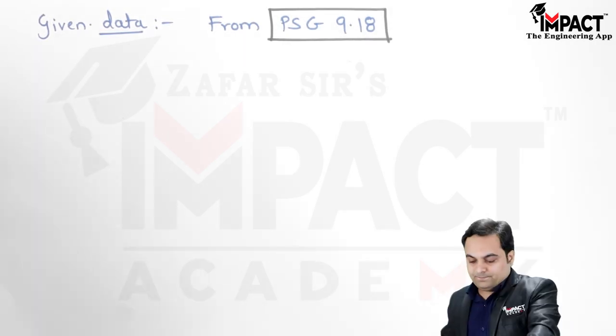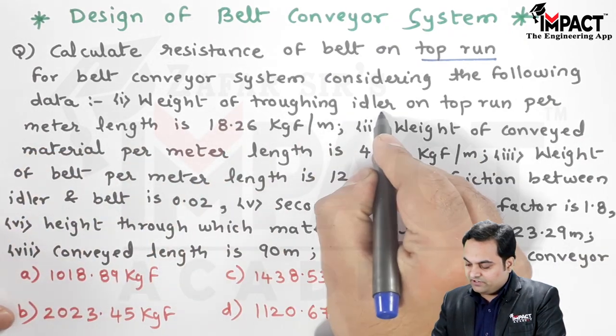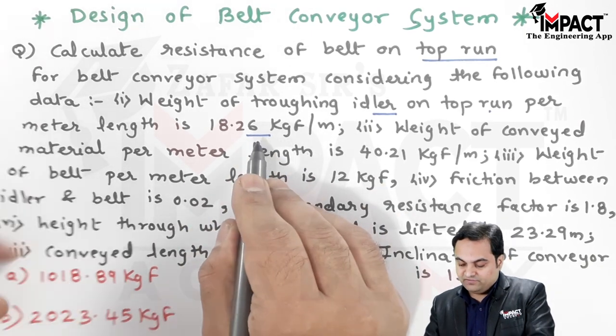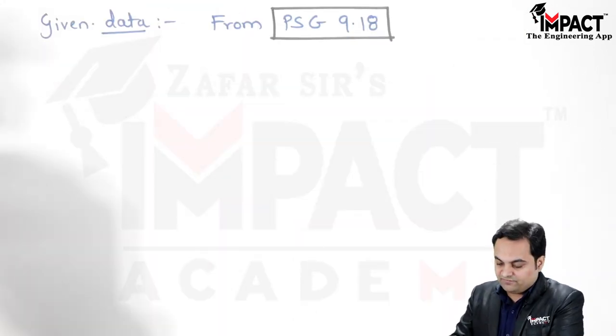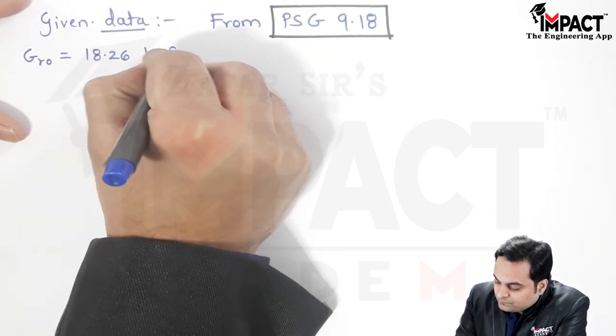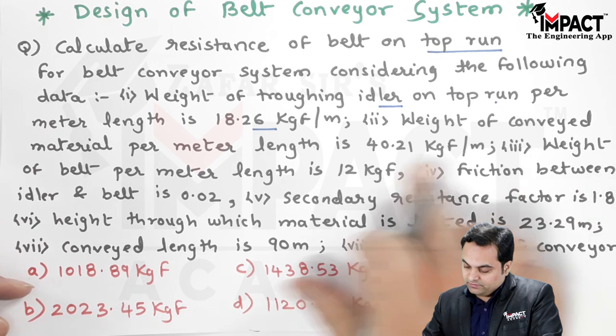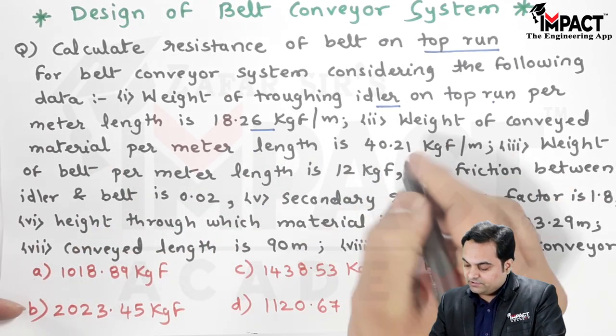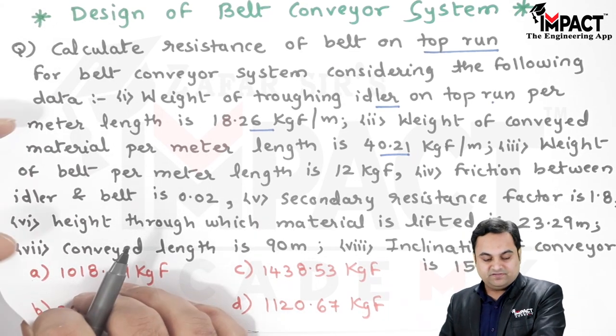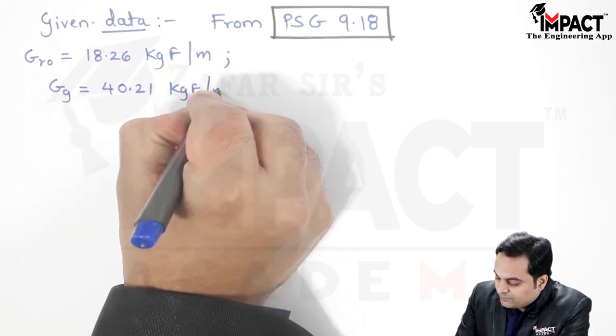So it is given for a belt conveyor system considering the following data: Weight of the troughing idlers on the top run per meter length, so weight of the idlers are given. Weight of the idlers would be denoted by G suffix RO, 18.26 kgf per meter. Next, weight of the conveyed material per meter length is 40.21, and from PSG weight of the conveyed material is denoted as G suffix G, 40.21 kgf per meter.